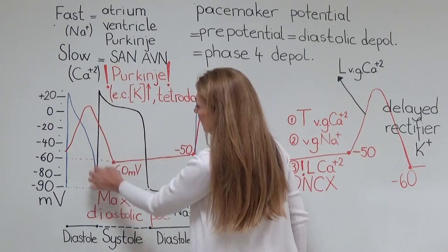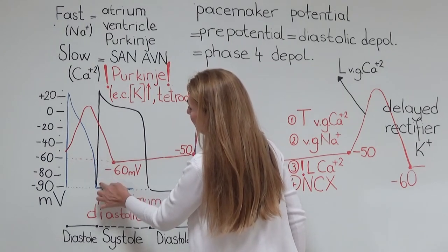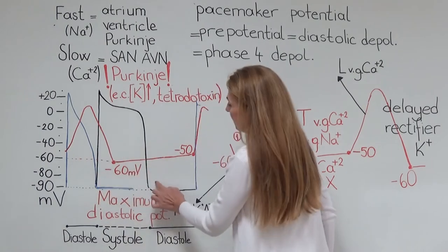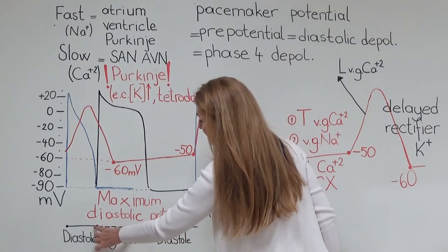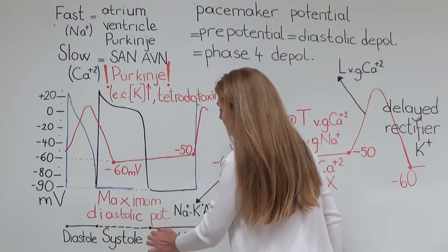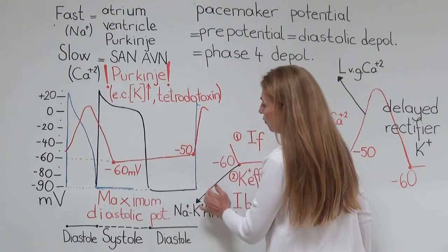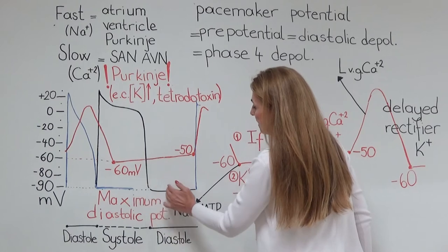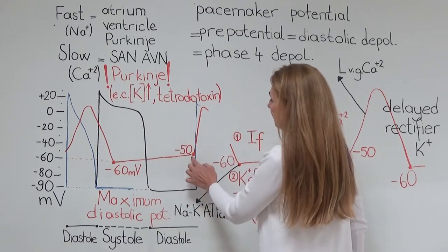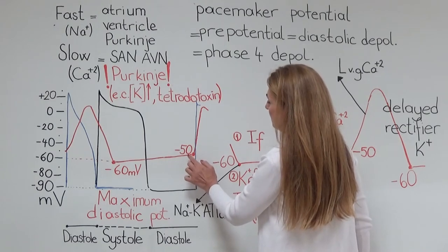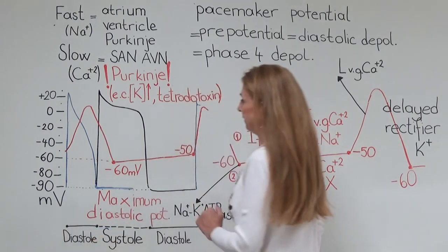A little after the depolarization, the ventricular muscle starts to contract. A little after the ventricular repolarization, the ventricular muscle relaxes — this period is the systole. After that, the atrial and ventricular muscle cells have a constant resting membrane potential, which is the beginning of diastole, until a new action potential comes from the sinoatrial node and the diastole is completed.